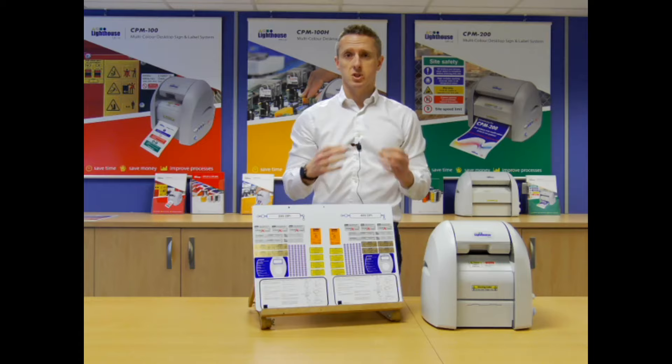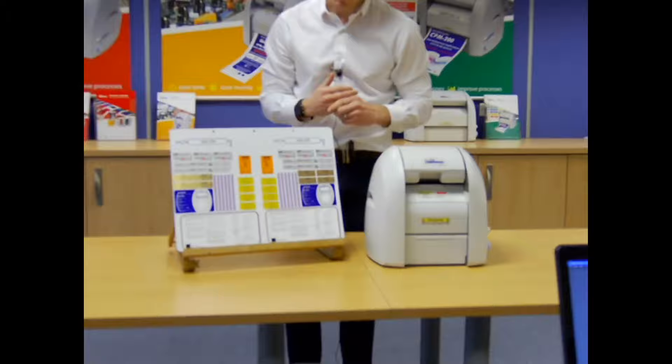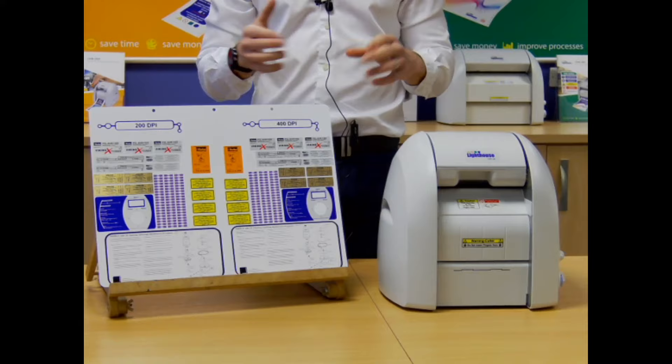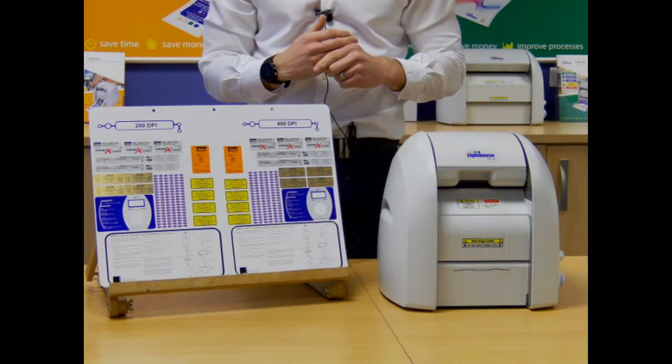What I'm going to do is zoom into the boards so you can see them. I can go through some of the requirements for the system initially. So if we just zoom into the first board. This system, CPM 100 H, we do two different versions of the CPM 100. This is the higher definition version, the 400 DPI printer. We do have another video for the 200 DPI printer so you can see the difference between the two.